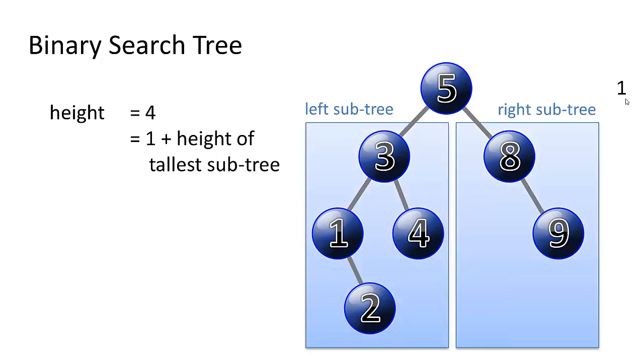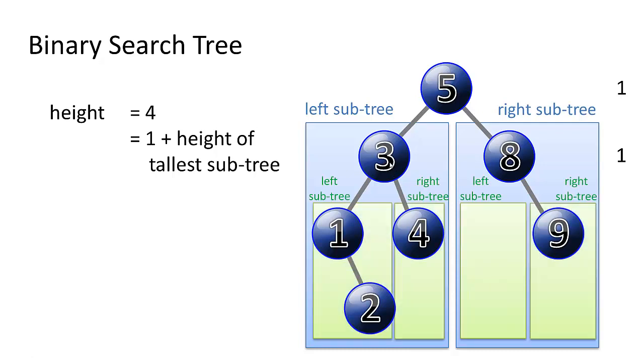So we have a left subtree and a right subtree. So for each subtree we could say the height of this subtree is one plus the height of its tallest subtree. So we have a left subtree and a right subtree. And then we could do the same thing on the right subtree of the five. This height of the eight subtree is one plus the height of its tallest subtree.